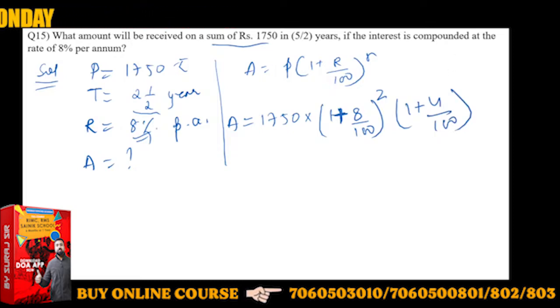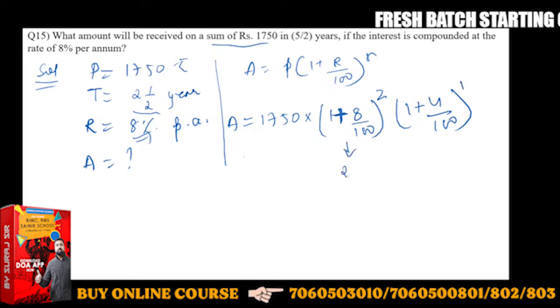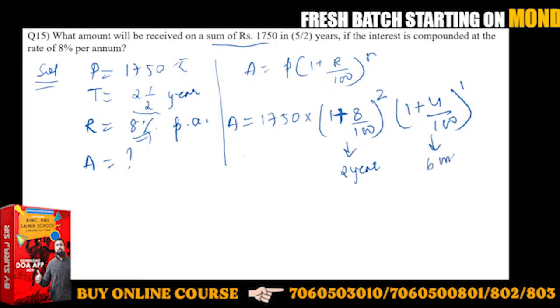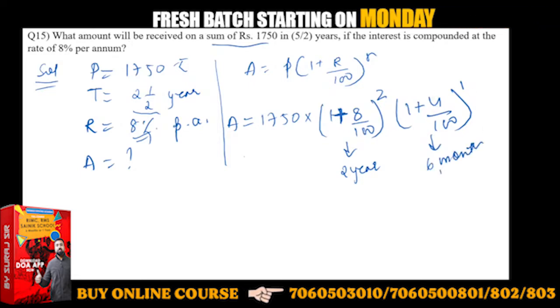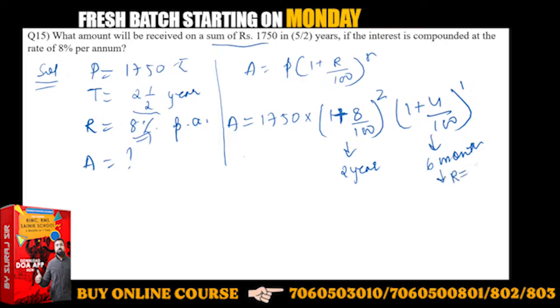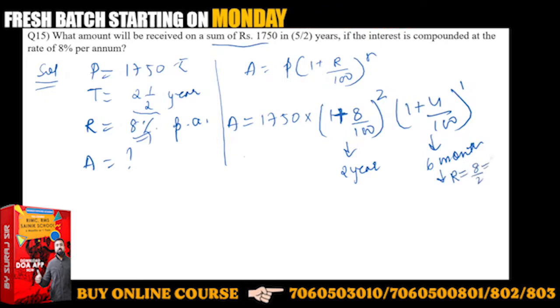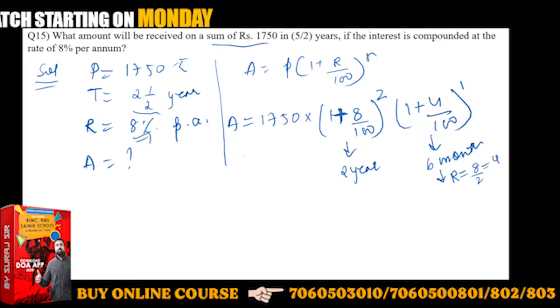Do you understand this? This concept is very important. This is for two years, and this is for six months. In six months, the rate is also halved. See, that's why I have taken 4 - the six month rate will be half, 8 by 2 that will be 4% per not annum, per six months.